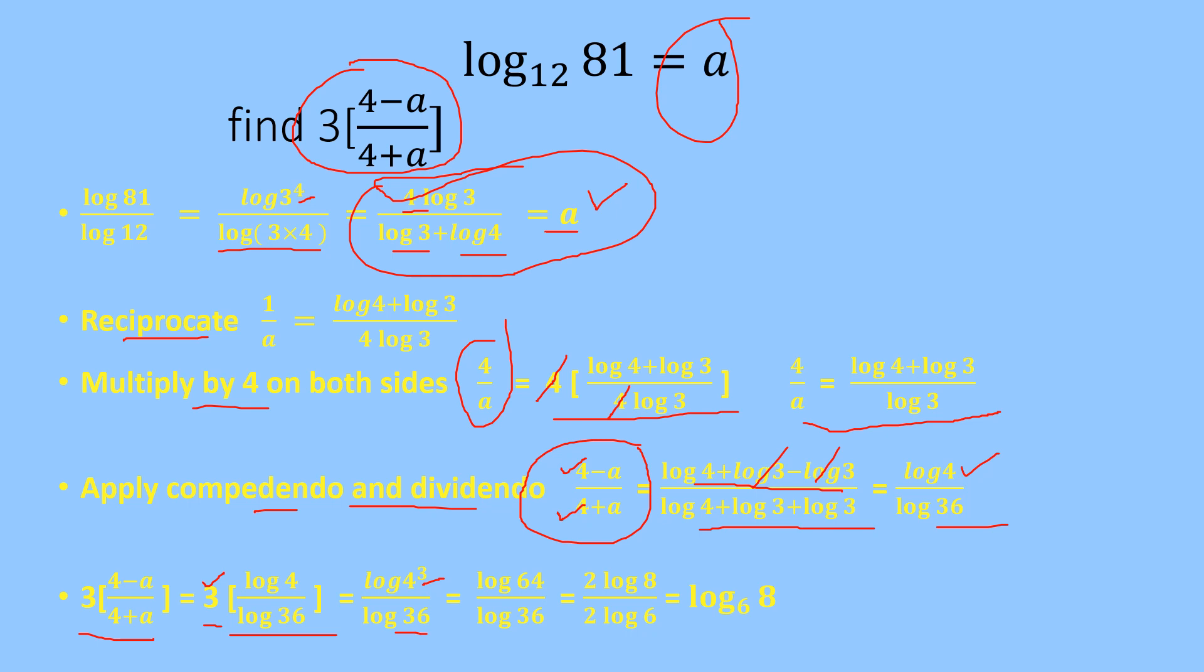4 power 3 can be written as log of 64 upon log of 36. Log 64 can be transformed as 2 log of 8 upon 2 log of 6 because 36 is 6 square. Cancel out this 2 with this 2, your answer is log of 8 upon log of 6 which can be written as log of 8 to the base 6. This is your final answer.